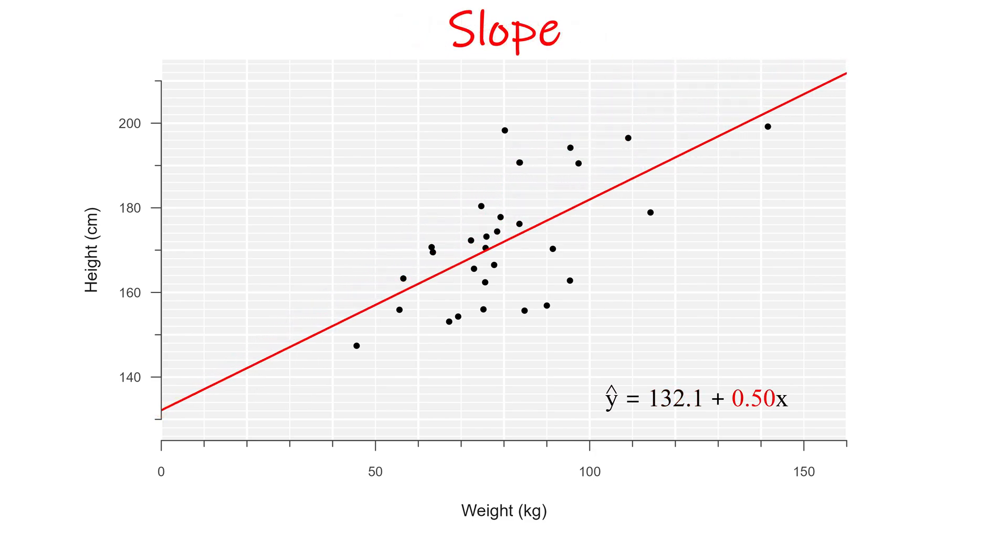In this example the slope is positive, so taller people are on average heavier. For each value of the explanatory variable we have a predicted value of the outcome. You can see that these predictions are not perfect. The observations do not fall exactly on the line.